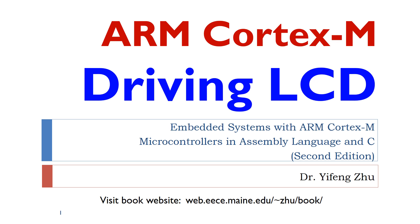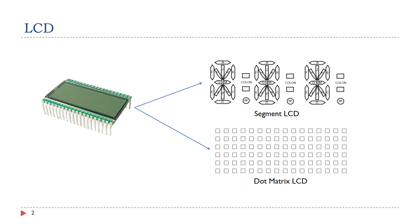This short video will explain how to write software to drive an LCD. There are two major types of LCDs: segment LCD and dot matrix LCD. A segment LCD can only display English alphabet, Arabic numbers, and a few simple symbols. A dot matrix LCD has pixels arranged in rows and columns and can display more characters than segment LCDs.